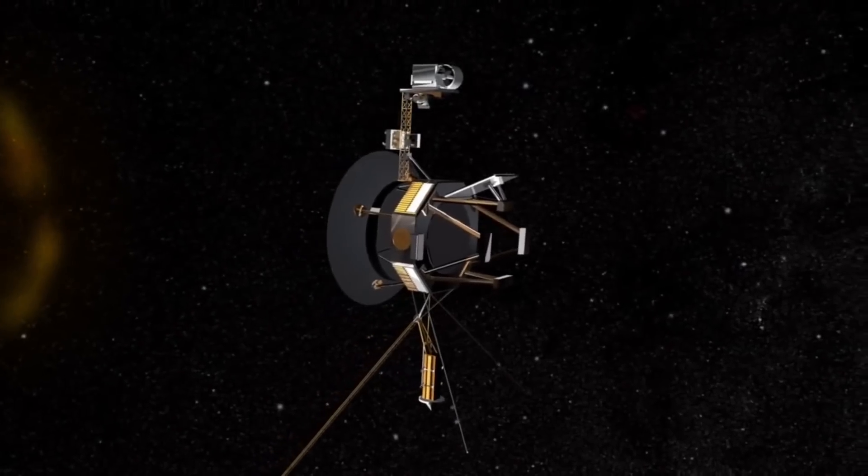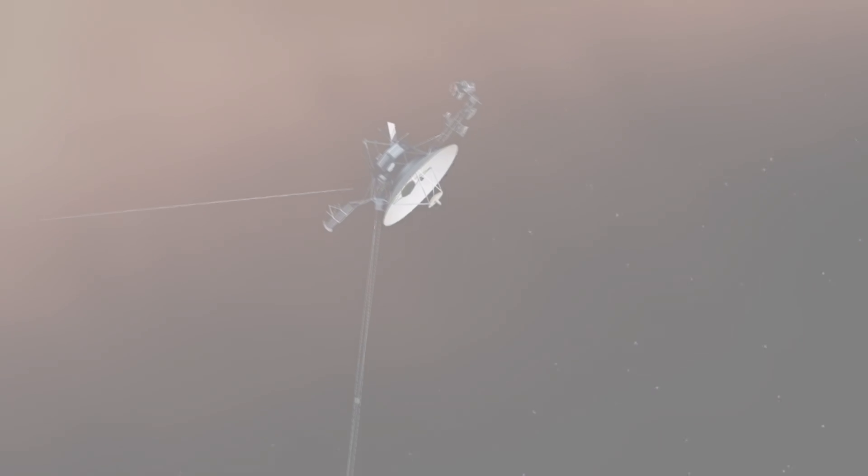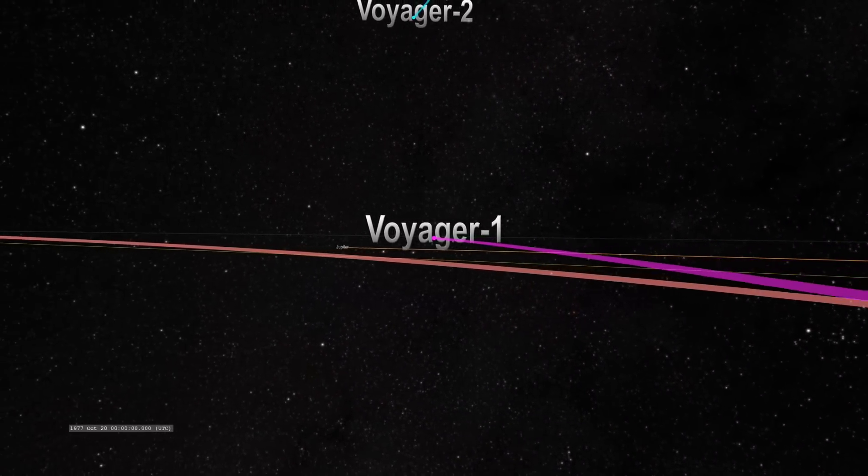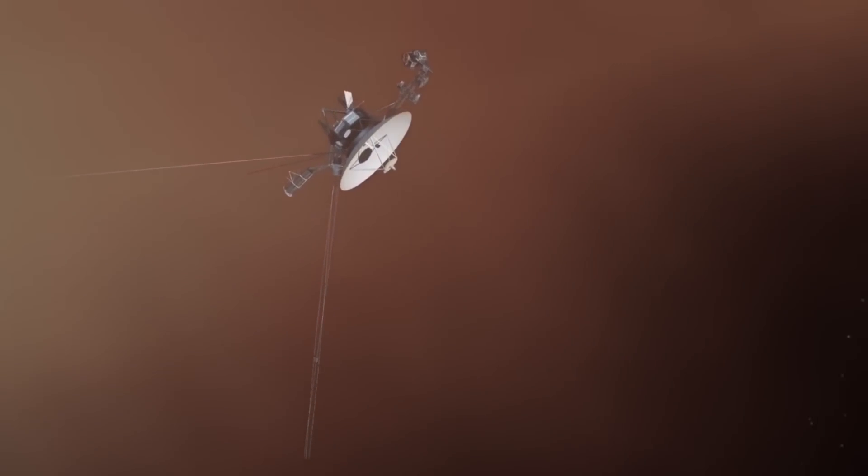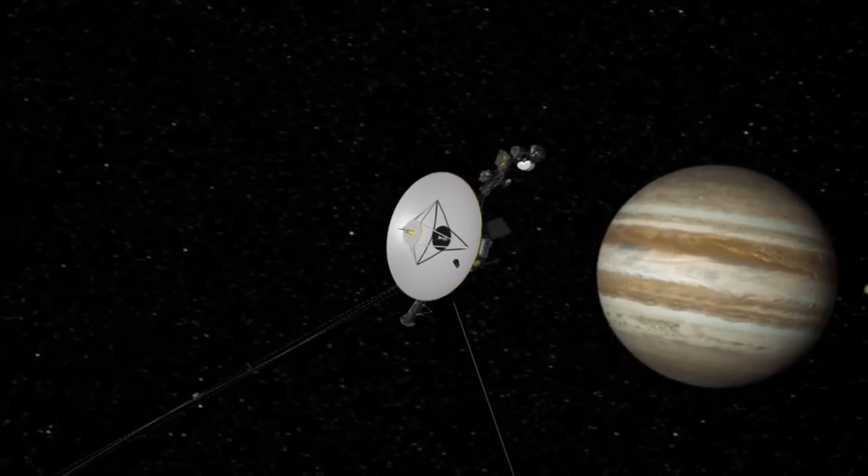Voyager 1 and Voyager 2 followed different trajectories, enabling them to explore different regions of our solar system. Voyager 1's trajectory took it on a faster route, allowing it to reach its primary target, Jupiter, ahead of Voyager 2.